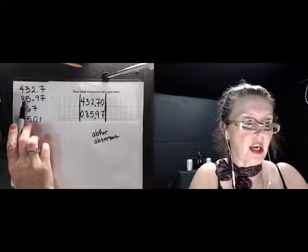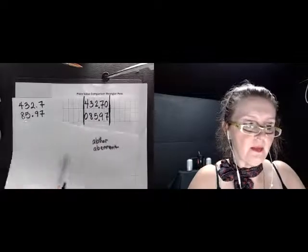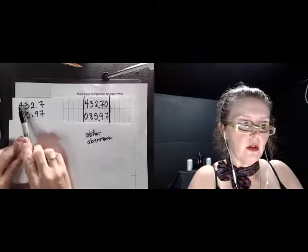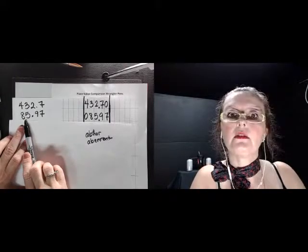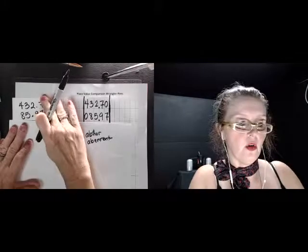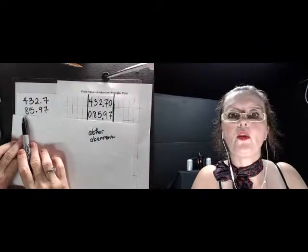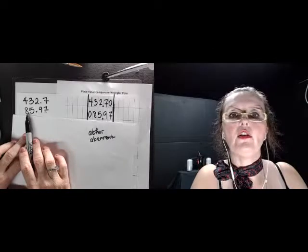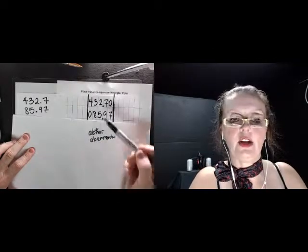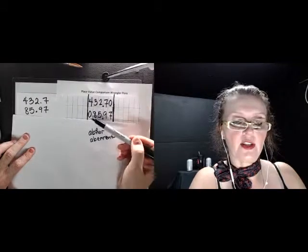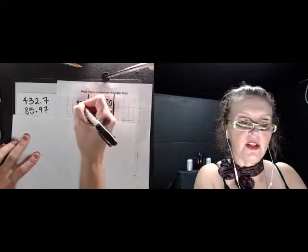So the point is you go each space. You can't do that here because on this one if you look at the first digit you go, oh well 85.97 is bigger. Well in alphabetical order yes, however you only use alphabetical order after you get it into the wrangler pen. So now you look at this one and you go, aha, four is bigger than zero, so this is the biggest.